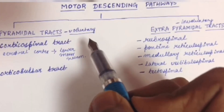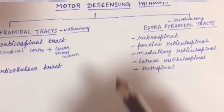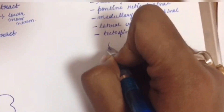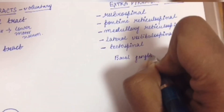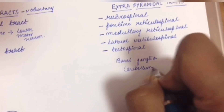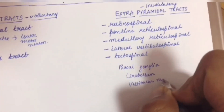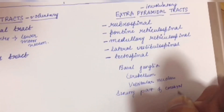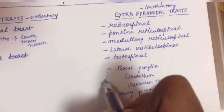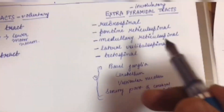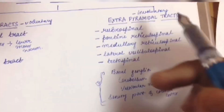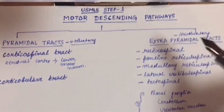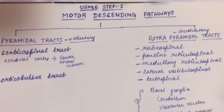The pyramidal tract controls voluntary movements while the extrapyramidal tract controls involuntary movements. All the tracts of the extrapyramidal system are controlled and regulated by the basal ganglia, cerebellum, vestibular nucleus, and the sensory part of the cerebral cortex. These four components play a major role in controlling the extrapyramidal tract and are also considered part of the extrapyramidal system. Hope you liked this video, please share and subscribe to the channel.